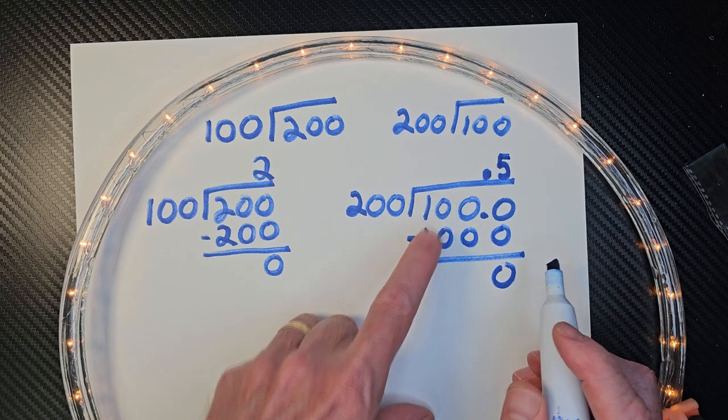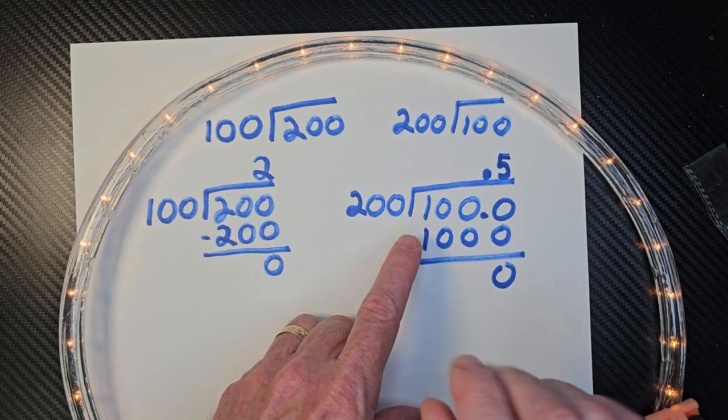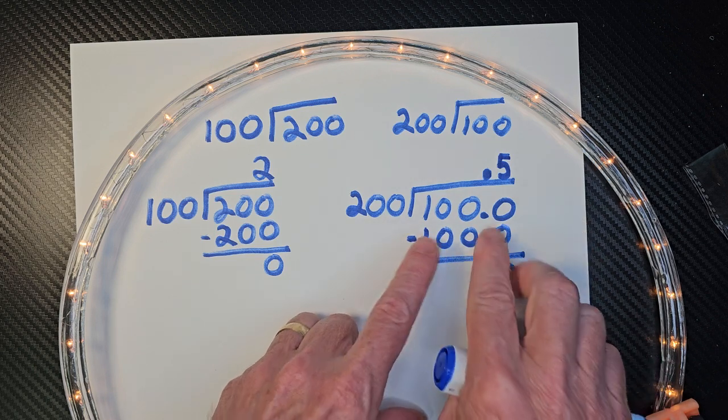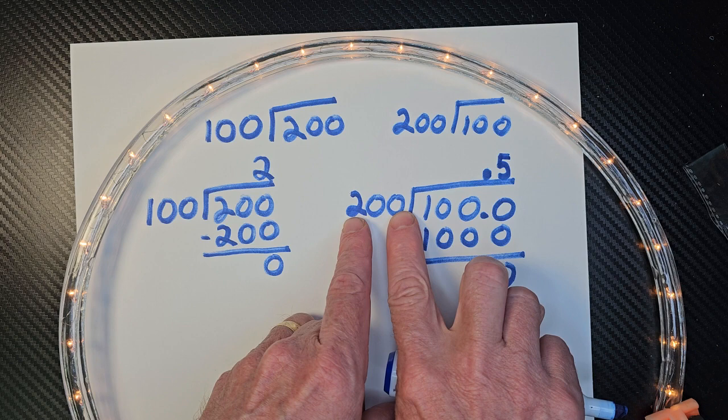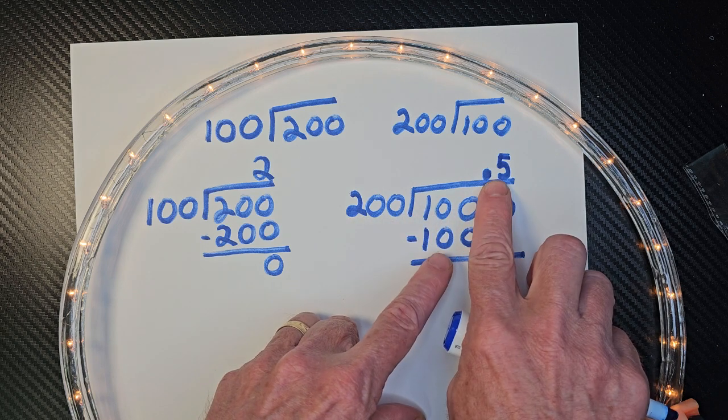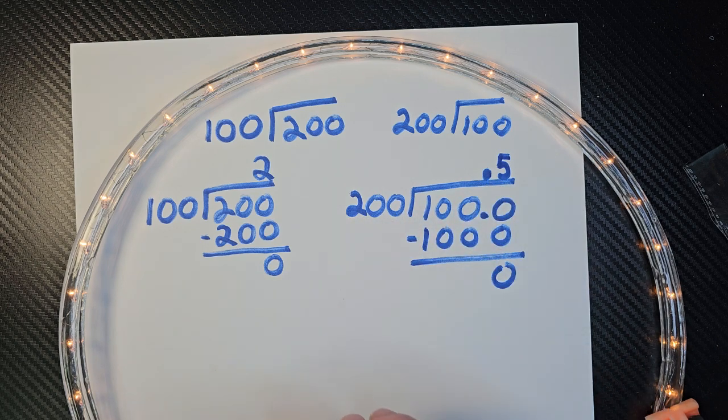So my answer is, what, so the original problem was, what is 100 divided by 200? It would be 0.5, right? All right. Okay.